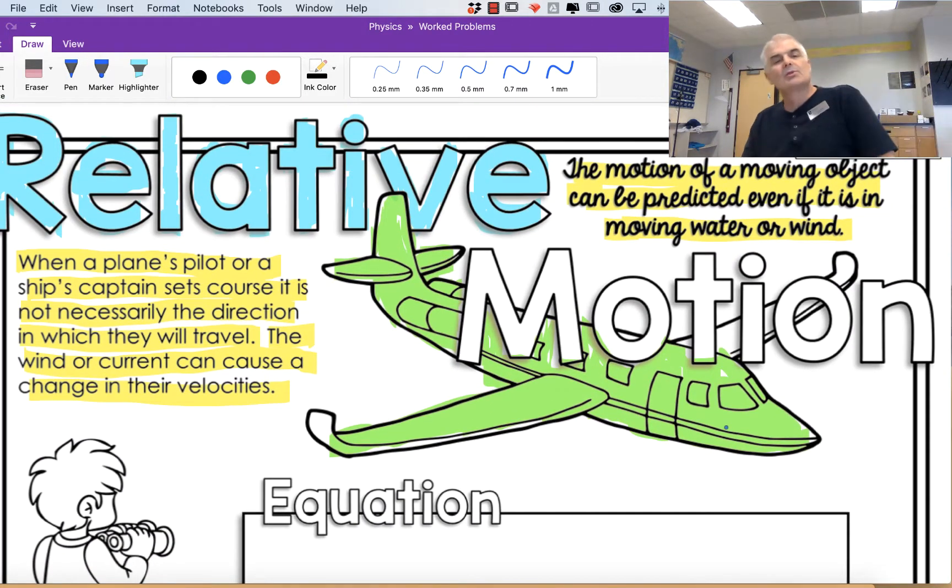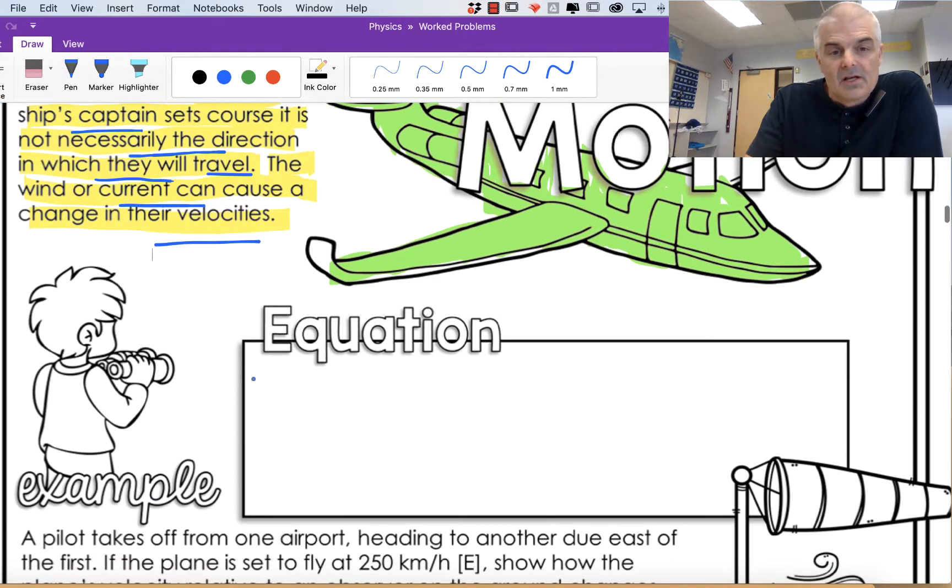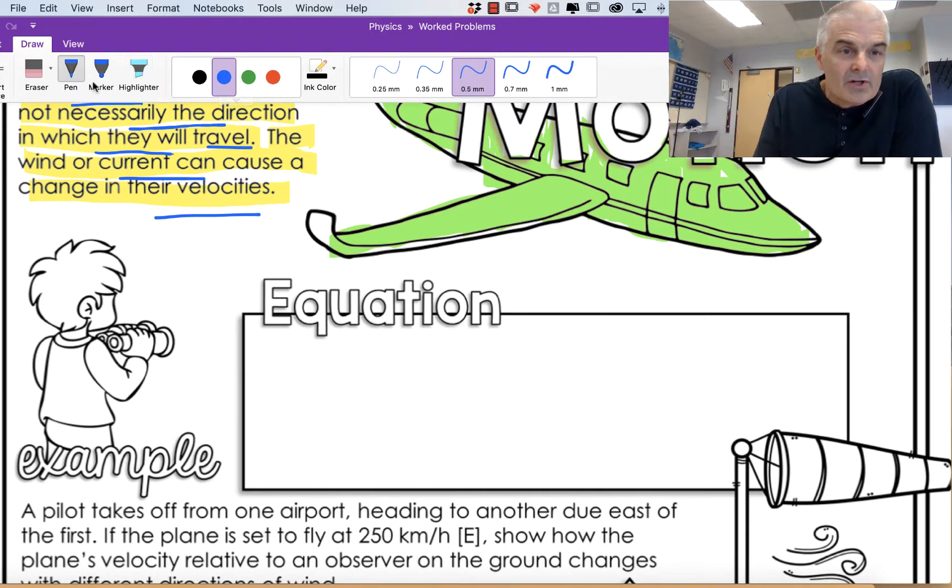So let's jump ahead, do a sample problem here with pilots and stuff. When a plane's pilot or ship's captain sets course, it's not necessarily in the direction in which they will travel. The motion of a moving object can be predicted even if it's moving in water or wind. The wind or the current can cause a change in their velocities.